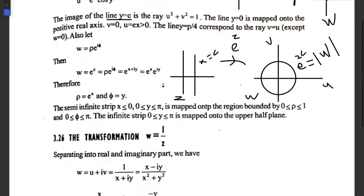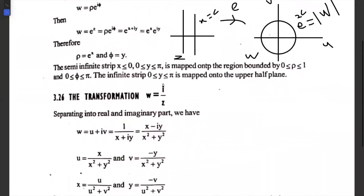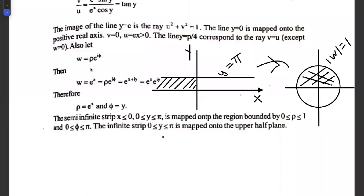Now consider the polar form. Let w = ρ · e^(iφ) be any point in the w-plane. Then from w = e^z = e^(x+iy) = e^x · e^(iy), comparing both sides gives ρ = e^x and φ = y.